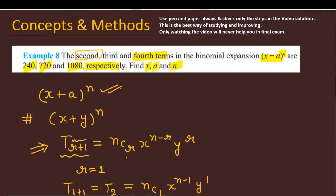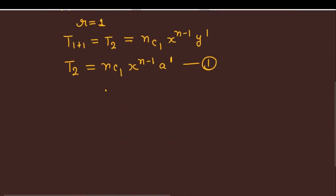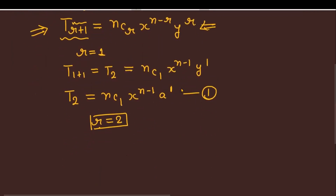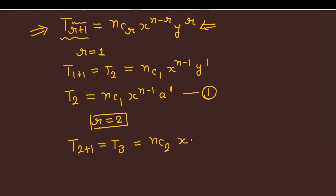Now let's find the third term. To get the third term, we substitute r=2. Substituting r=2 and y=a into the general term formula gives T3 = nC2 * x^(n-2) * a^2. This is equation number 2.